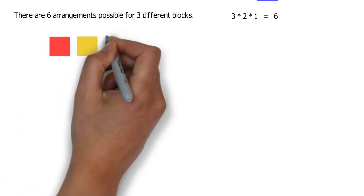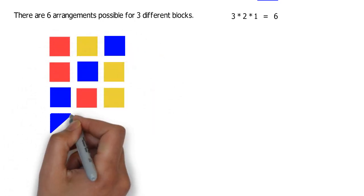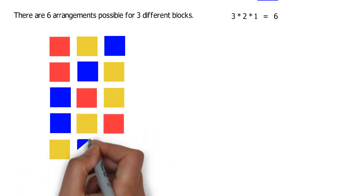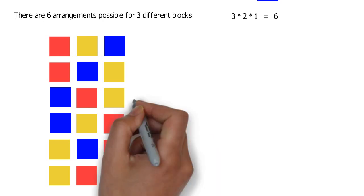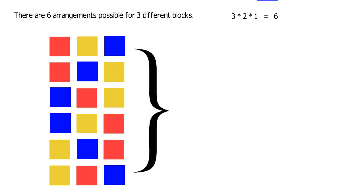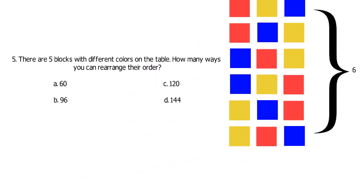And, if you're still getting confused, let's try to visualize it for a better understanding. We have 3 different colored blocks: red, blue and yellow. As we can see here, there are 6 ways on how we can rearrange these 3 blocks. And, for question number 5, try to analyze it with the recent concept. And, figure out why the answer is 120.